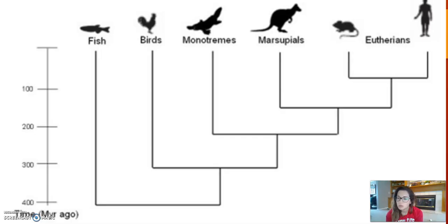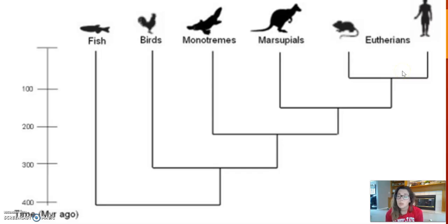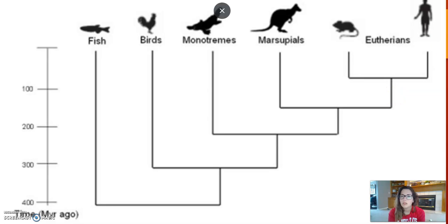Other things you need to know: if we ask which group of mammals is most closely related to eutherians, you look at the phylogenetic tree and determine which group branched off from eutherians most recently — that would be marsupials. Similarly, if I asked which group is most closely related to monotremes, the ones that branched off most recently would be the marsupials and eutherians.